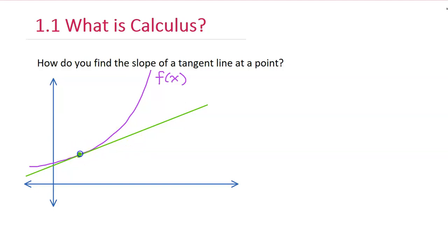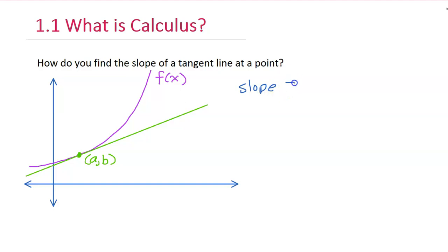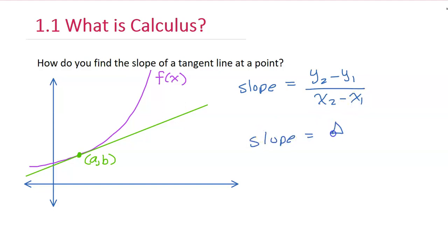The point of tangency is about right here — let's say that this point of tangency is the point A, B. We would love to find the slope of this tangent line at this particular point. Unfortunately, using our pre-calculus skills, we will immediately be stuck. Because slope is y2 minus y1 over x2 minus x1 — the change in y values divided by the change in x values — but we only have one point here. So we're going to have to use calculus to answer this question.